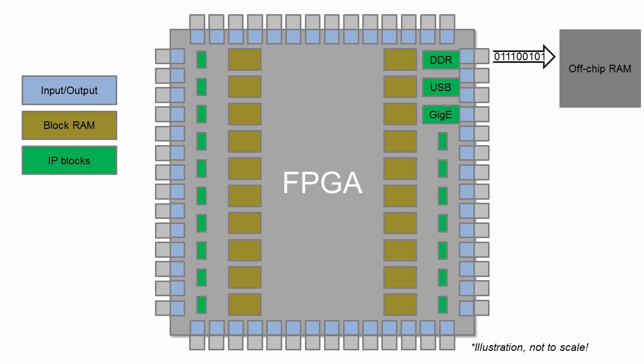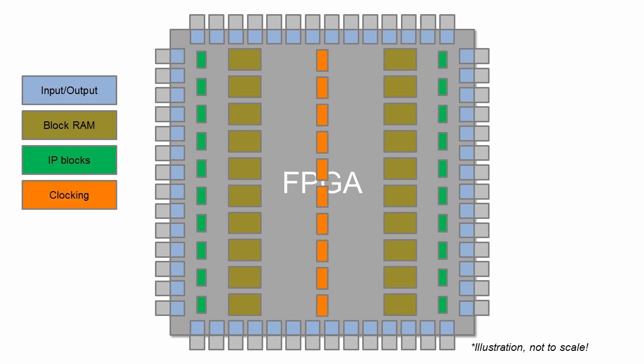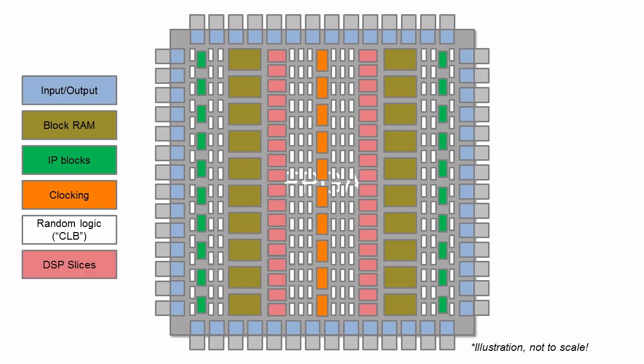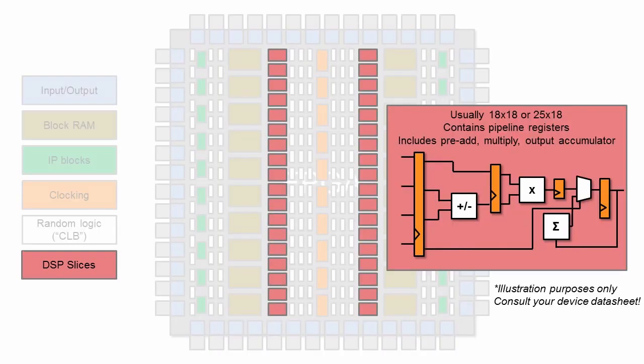IP blocks are pre-verified building blocks that perform common tasks and are available in ASIC or FPGA hardware. All hardware also has random logic and clocking structures for programming customized functionality. FPGAs additionally have pre-configured DSP slices for performing heavy arithmetic — efficient implementations of multipliers with built-in math and registers to synchronize timing.